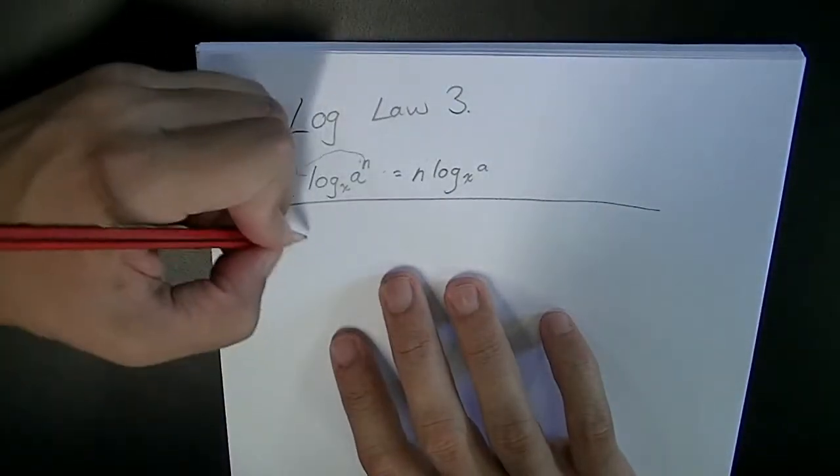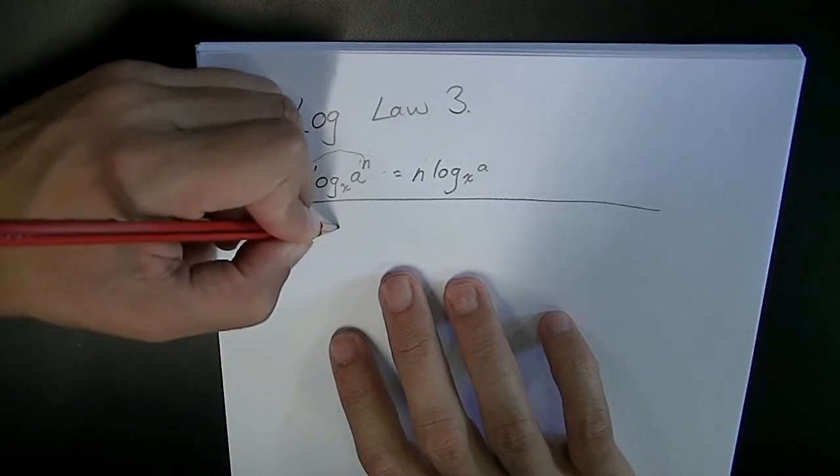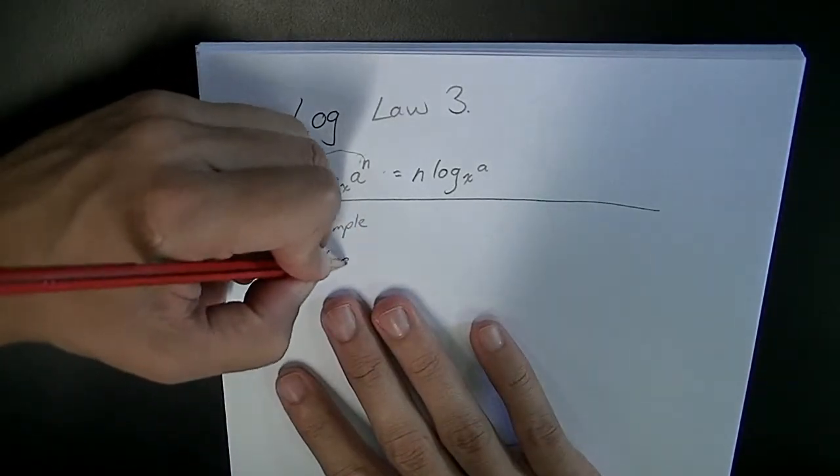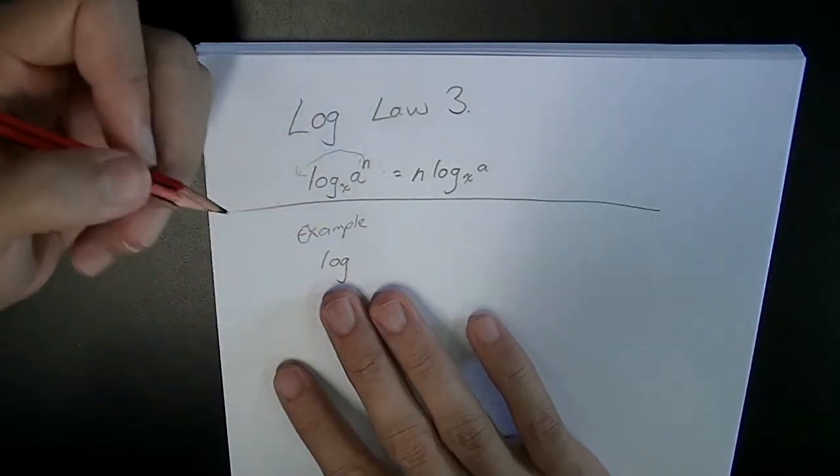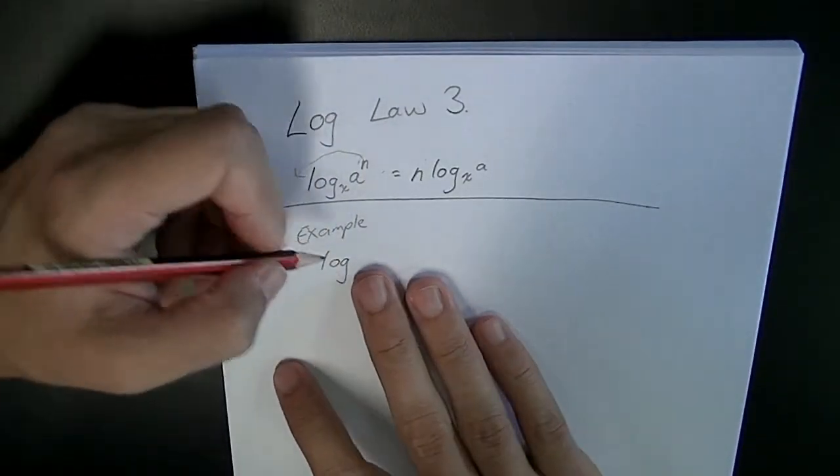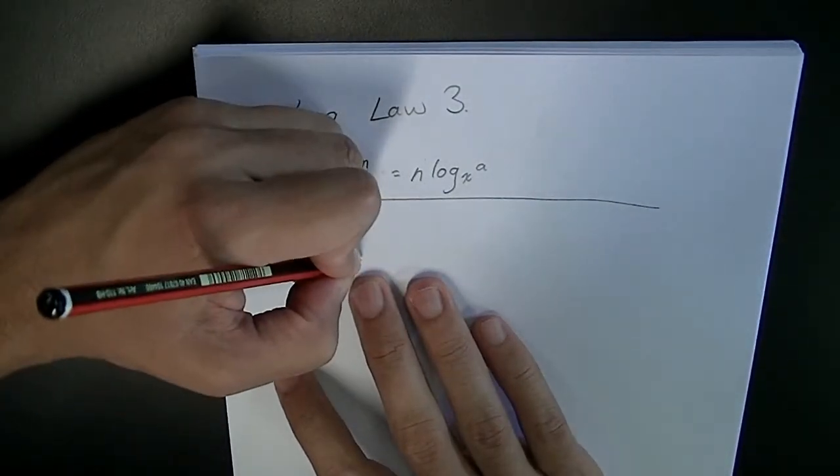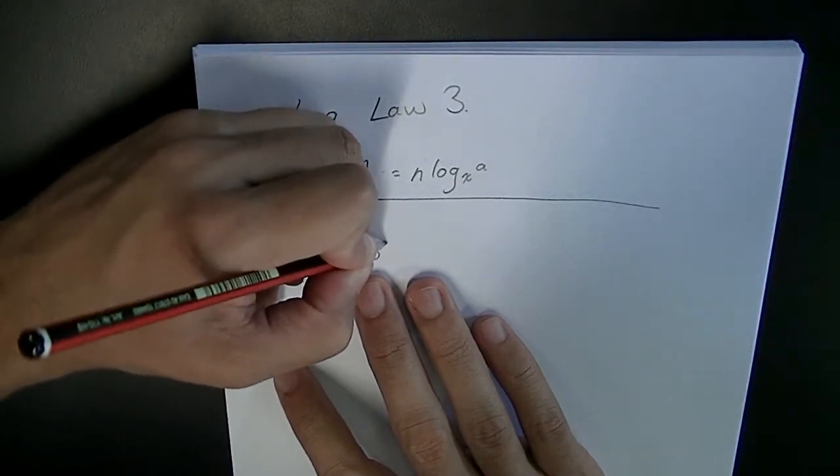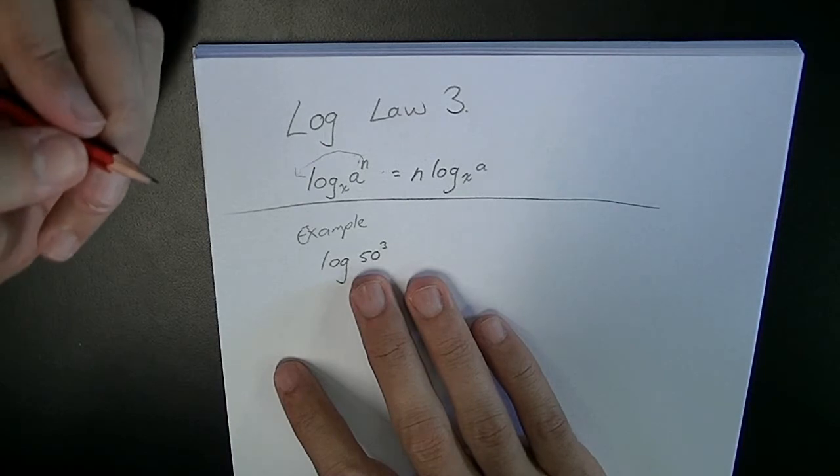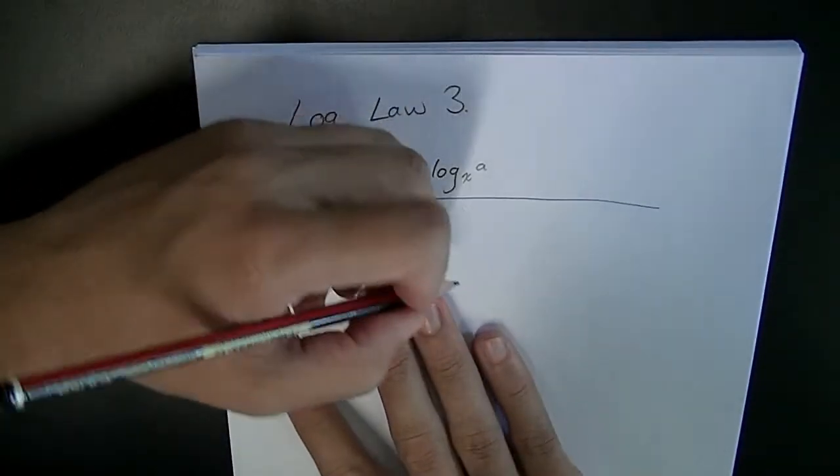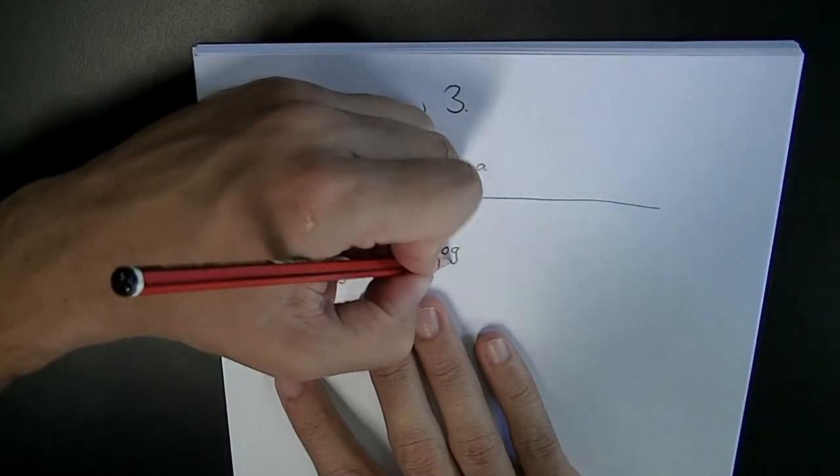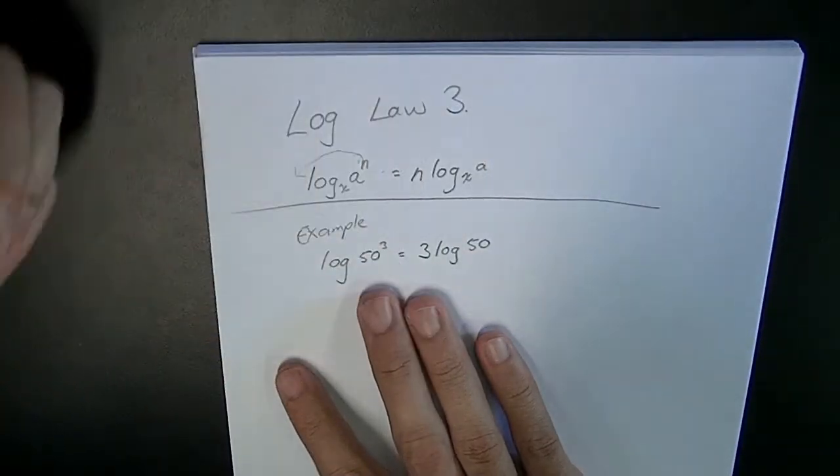Now, practical example. We could say that log, well, let's make it log base 10 again so we don't need to write any bases here. Log base 10, 50 to the 3 is equal to 3 times log base 10, 50.